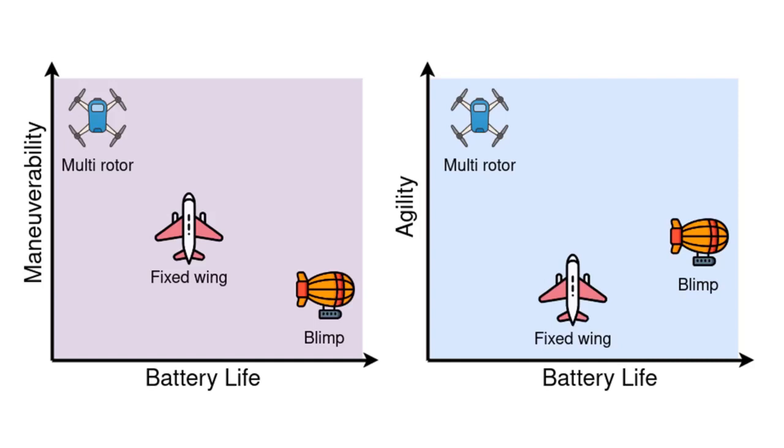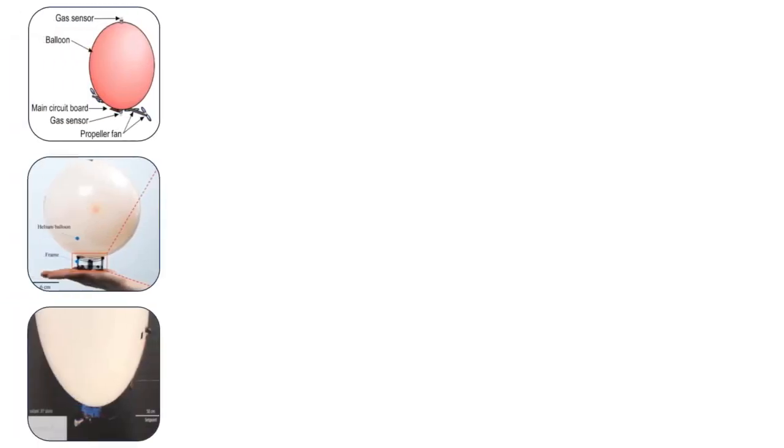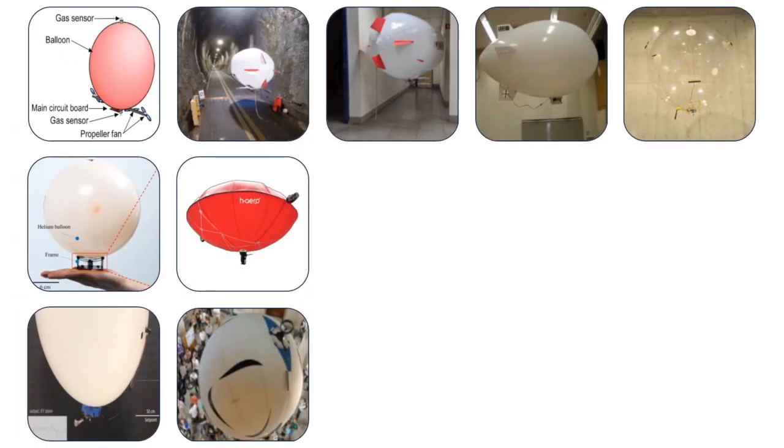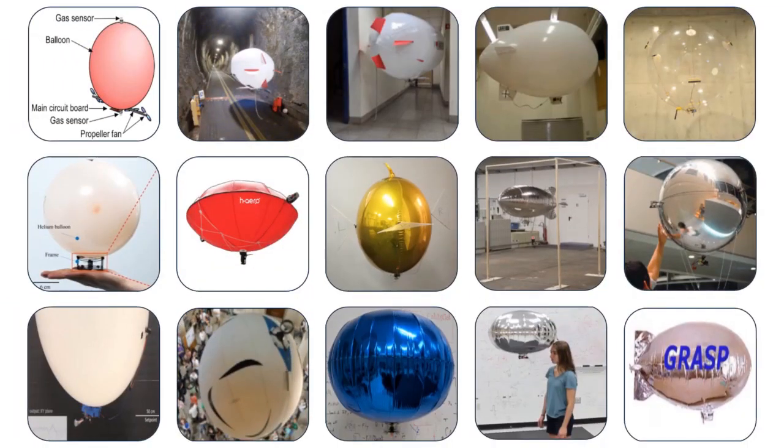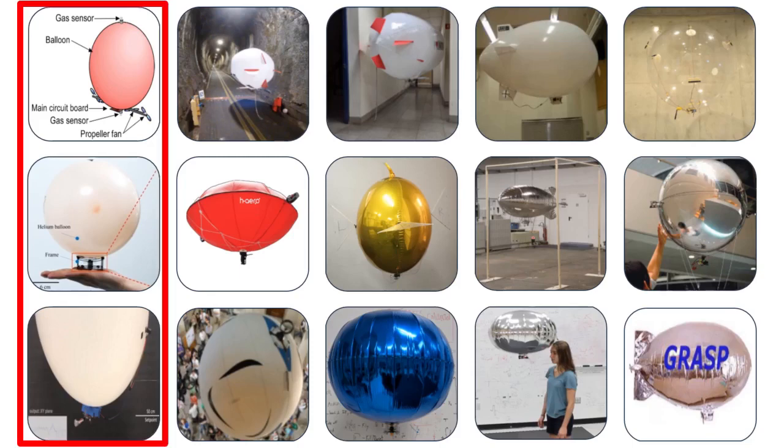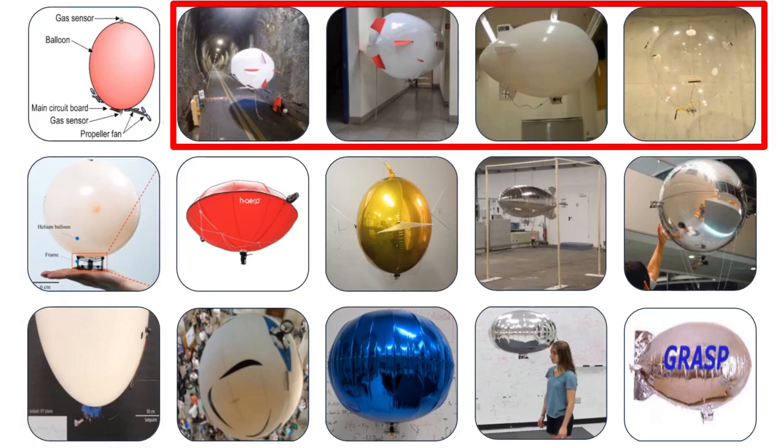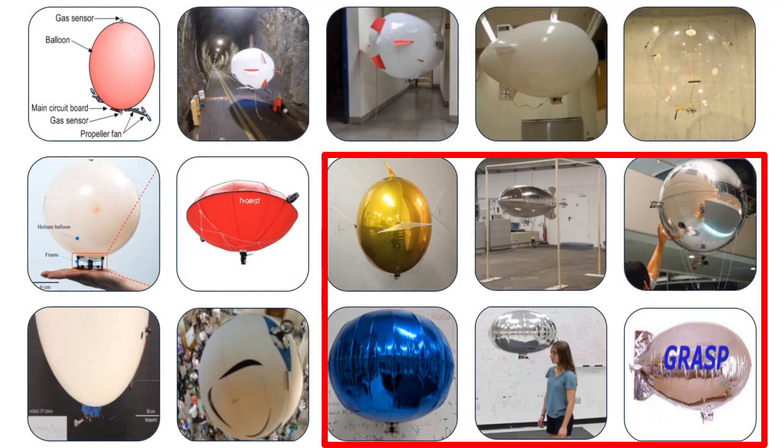Out of these, miniaturized omnidirectional blimps like JANICE triumph over other designs by providing high agility and high battery life. But even platforms like JANICE and other blimp designs found in literature all possess a single helium reservoir, which takes the form of a latex, PVC, or mylar balloon and is responsible for generating lift.